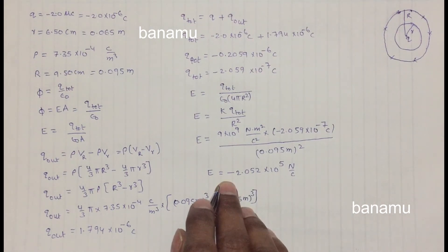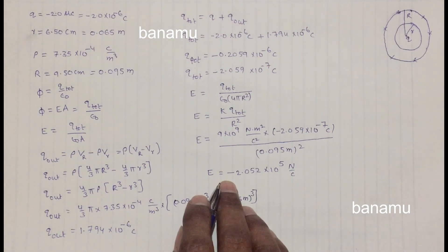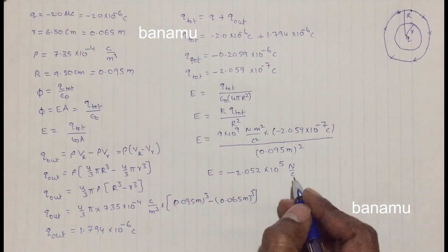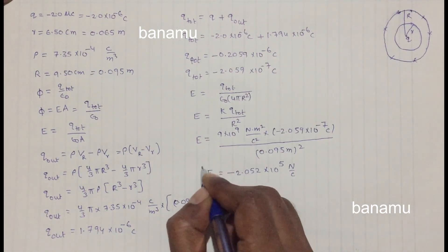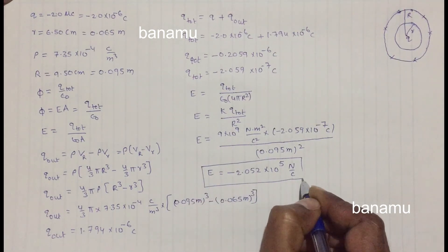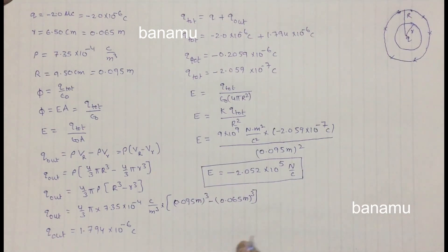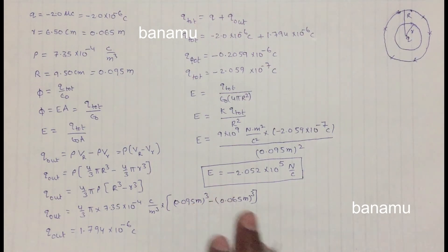The electric field E is negative because the direction of the electric field is towards the center, i.e., radially inward on the Gaussian surface. This is the electric field at point R = 9.5 cm, and the negative sign indicates the field points radially inward.